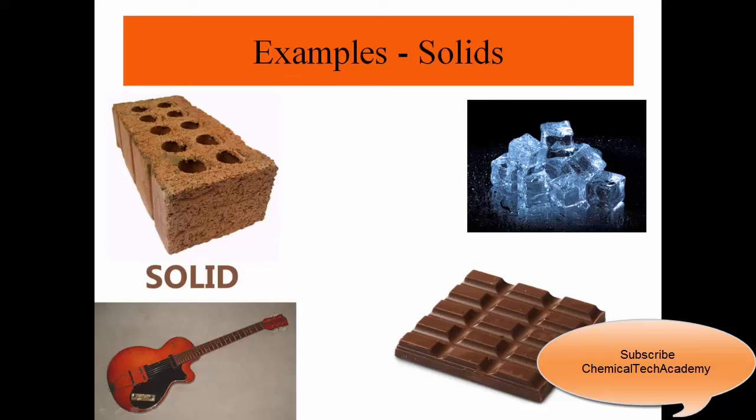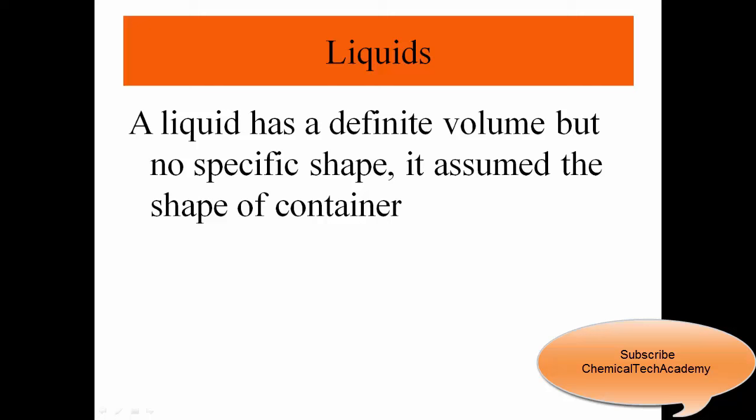The second class of matter is called liquid. A liquid has a definite volume but no specific shape, so it assumes the shape of its container. In liquid matter, atoms or molecules pack about as closely as they do in solid matter, but they are free to move relative to each other, giving a liquid fixed volume but not a fixed shape. A liquid is a form of matter that flows, has constant volume, and takes the shape of its container.